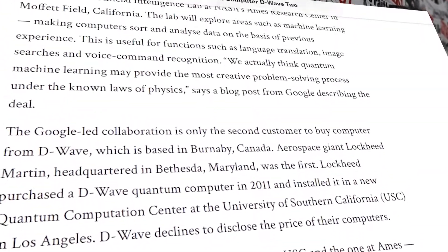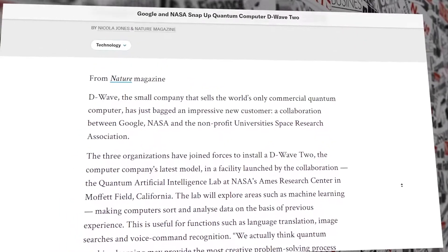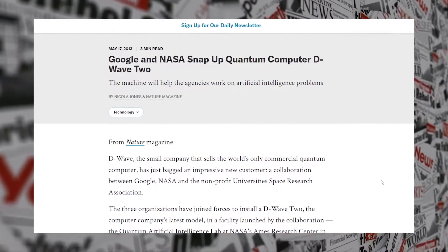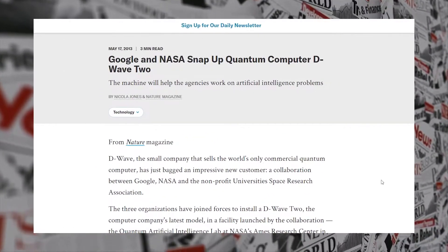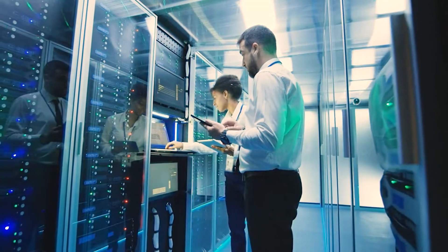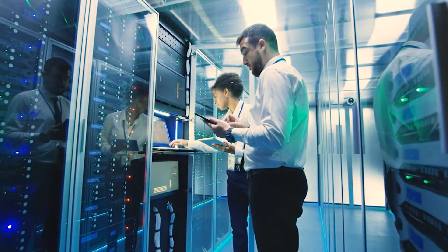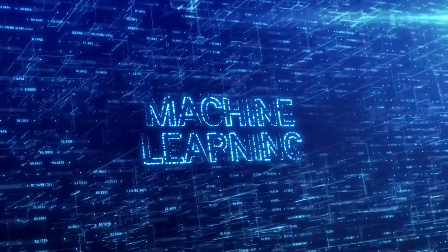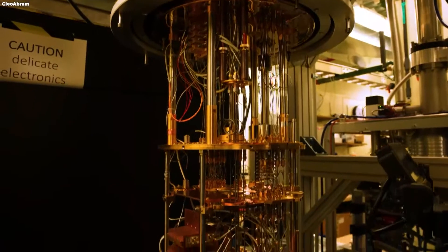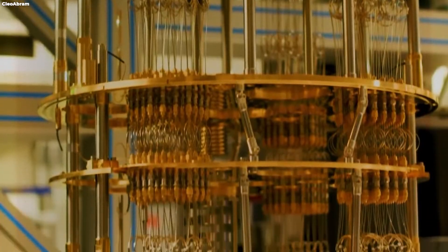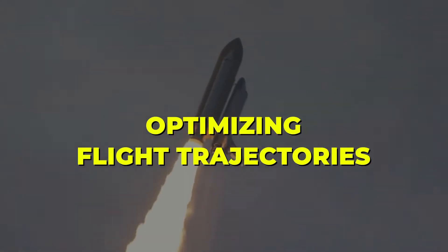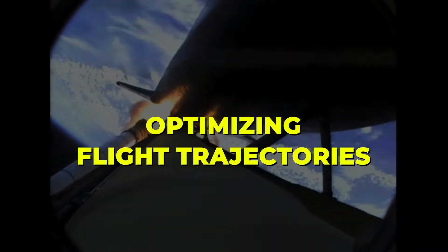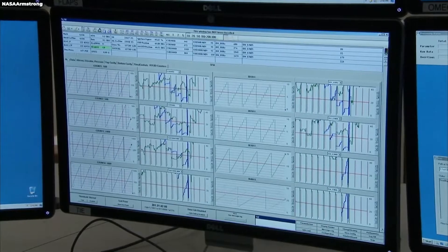In 2013, a significant milestone was reached when Google and NASA collaborated to create the D-Wave 2 quantum computer. This partnership aimed to harness the power of quantum computing for a variety of applications, including optimization problems and machine learning. Specifically, they hoped to address complex challenges such as optimizing flight trajectories for space missions and developing more efficient machine learning algorithms.